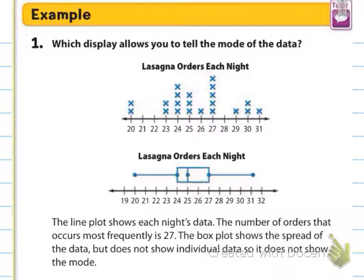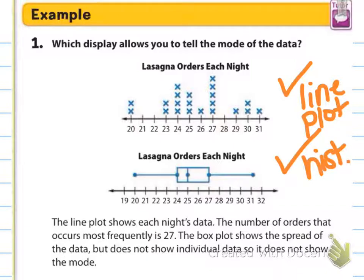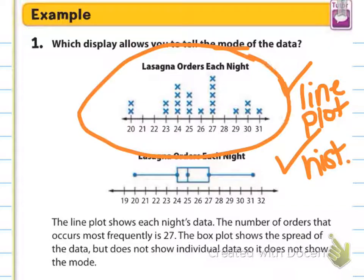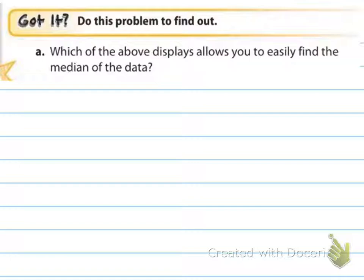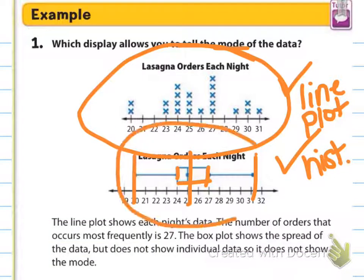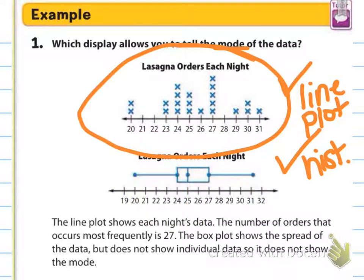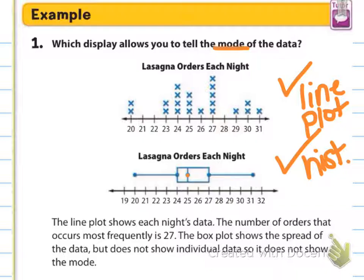Number one says: which display allows you to tell the mode of the data? Looking at these two graphs — this is our line plot and this is our histogram. Which one would you use to find the mode of the data? Hopefully you all understand that the line plot is the way to go. Our line plot shows us the mode, whereas our box and whisker tells us our median. It tells us our lowest and highest amounts and even our different quartiles and spread, but it does not give us our mode.